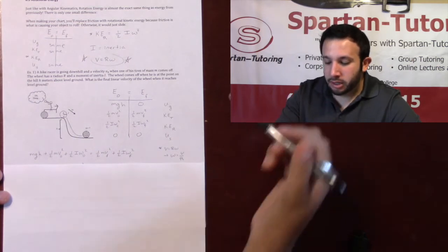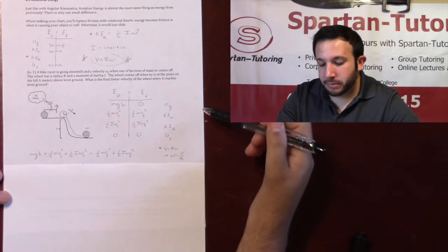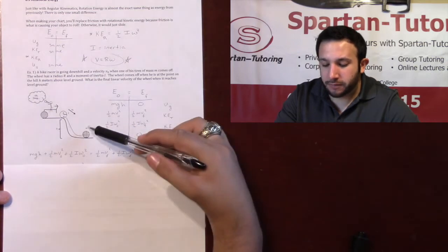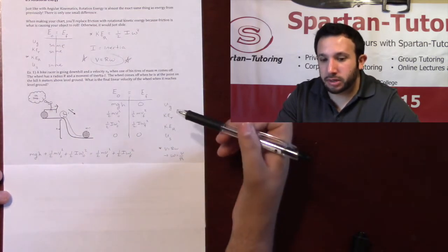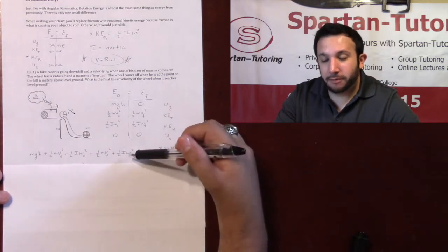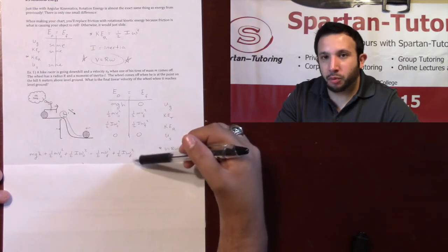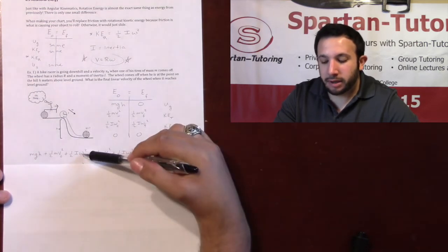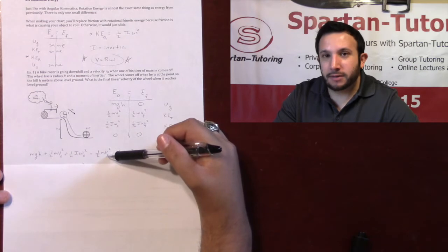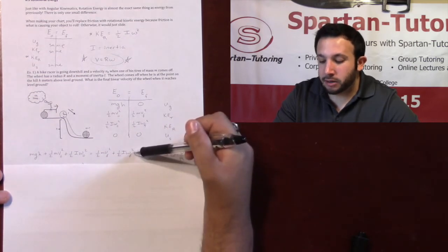at this point, we have an issue. And the issue is, I'm looking for final velocity, which is cool and everything. But I have three unknowns in this one equation. Omega naught's unknown, VF is unknown, omega F is unknown. So how the heck am I going to solve for VF?